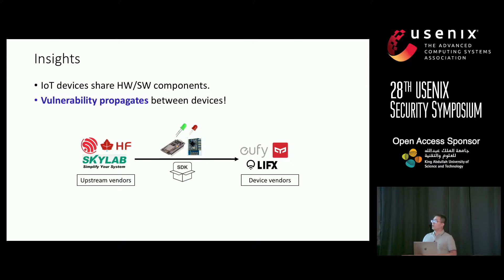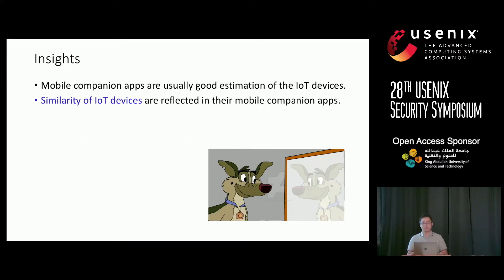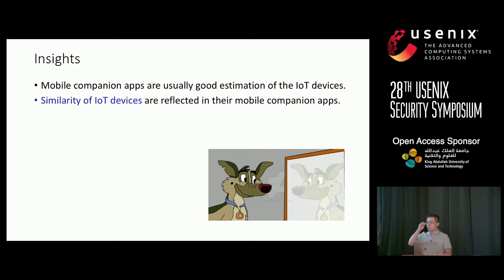The problem with this design is that if there is a vulnerability in a hardware component or open-source project, that vulnerability may be propagated to several IoT devices. Our second insight is that almost always, IoT devices are paired with a mobile companion app, and the mobile companion app is often a good estimation of what the device looks like. So to study similarity between IoT devices, we can analyze the similarity of mobile apps.